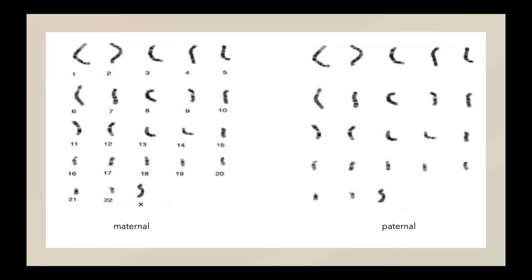We all have two copies of each chromosome. For example, we have two copies of chromosome number one, number two, number three, all the way up until the sex chromosomes. We are normally either XX or XY.